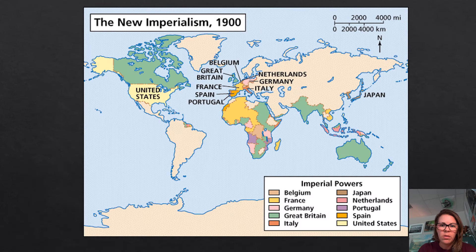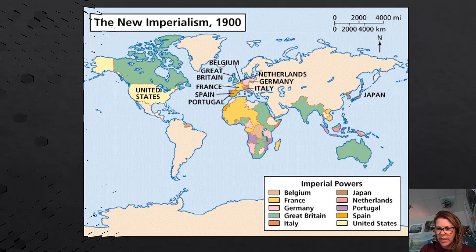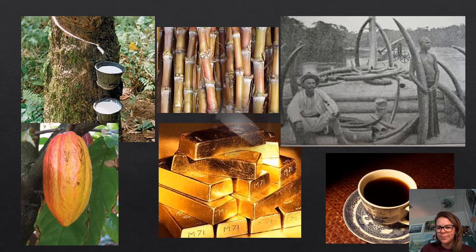By 1900, ten major Western nations had imperialized almost all of Africa, Southeast Asia, India, and the South Pacific. That little area of South America and Central America was colonized too — the Europeans just lost control there before 1900. The major resources driving all this mercantilism included rubber, gold, coffee, tea, spices, ivory, sugar, alcohol, and fruits.